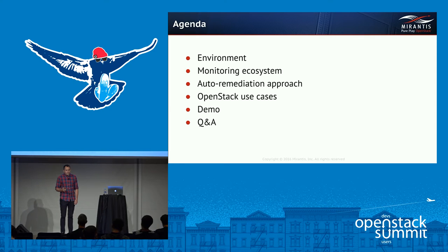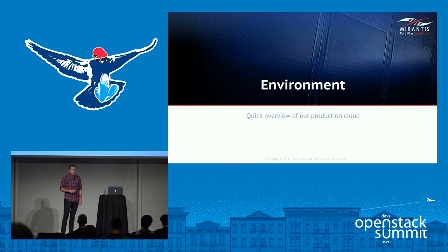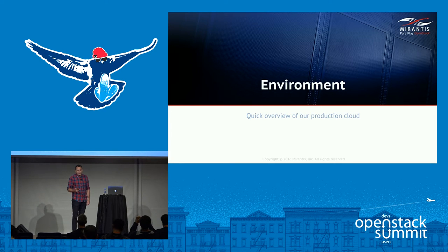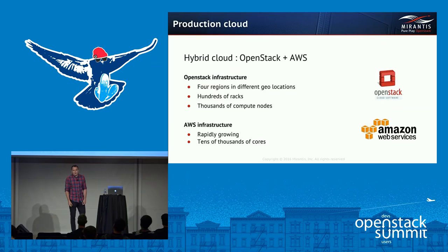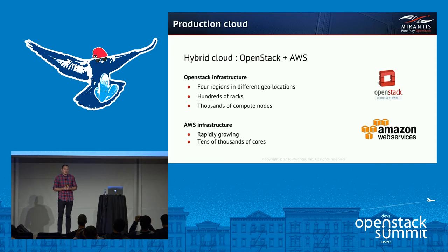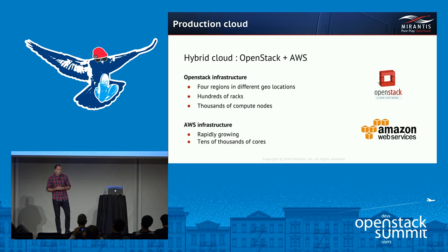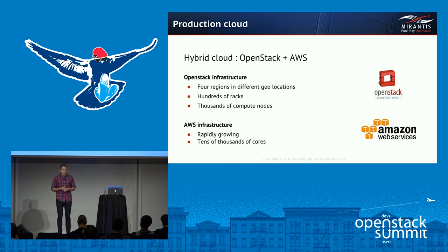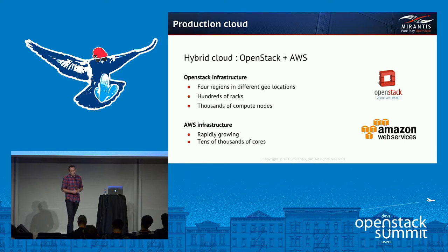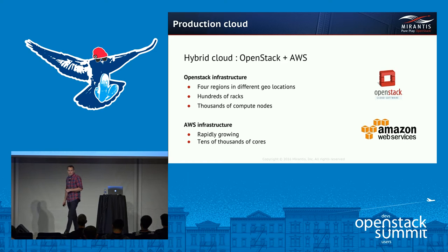To give you some context, here's how the Symantec environment looks like. Symantec has a hybrid cloud — basically OpenStack plus AWS. The OpenStack infrastructure consists of four regions across the globe, hundreds of racks, and thousands of hypervisors. The AWS infrastructure is also rapidly growing, already above tens of thousands of cores. But today, let's focus on OpenStack.